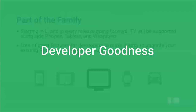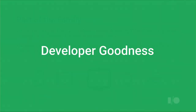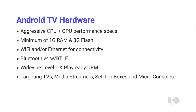We've set really aggressive hardware specs for Android TV devices. We want to make sure there's enough CPU and GPU to have great performance for apps and games. Minimum of 1 gig of RAM and 8 gigs of flash for storage, Wi-Fi and Ethernet for connectivity, and Bluetooth 4 and Bluetooth LE, which I think is going to be really important for accessories and co-presence. We require Widevine Level 1 on all TV devices — already studio-approved in most of the world for HD content.